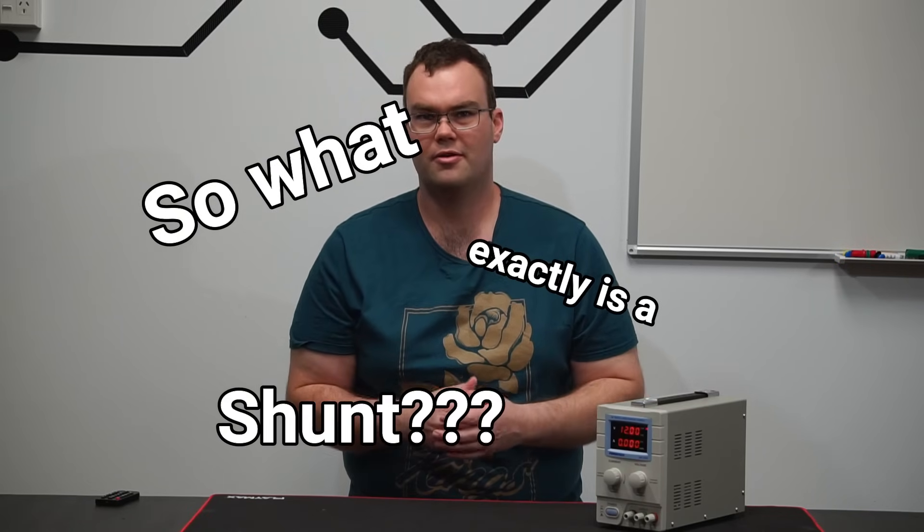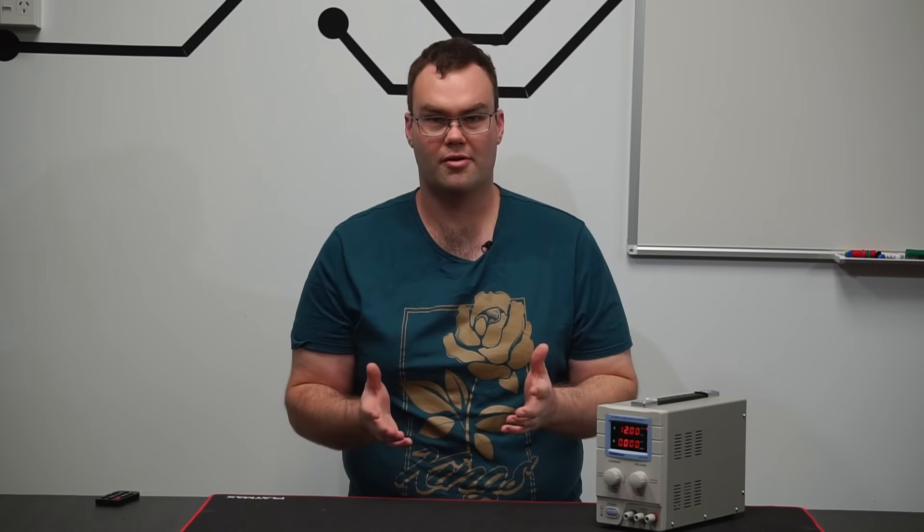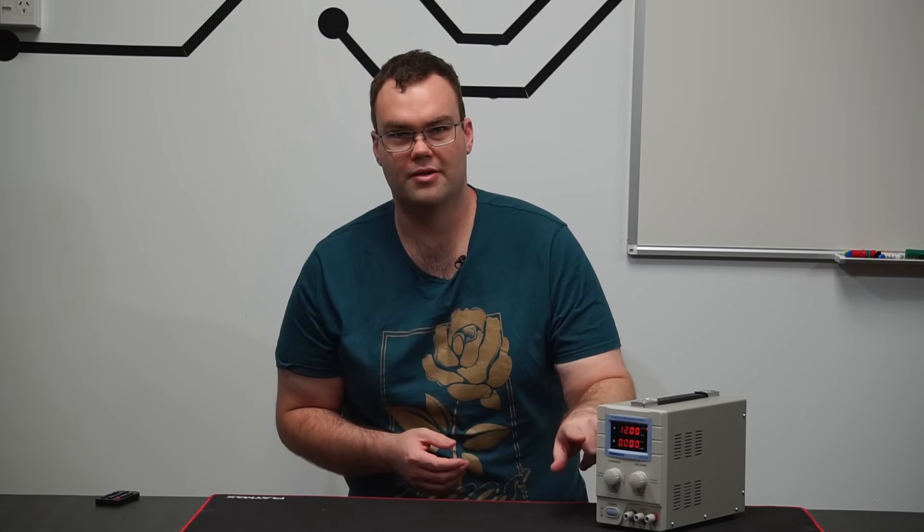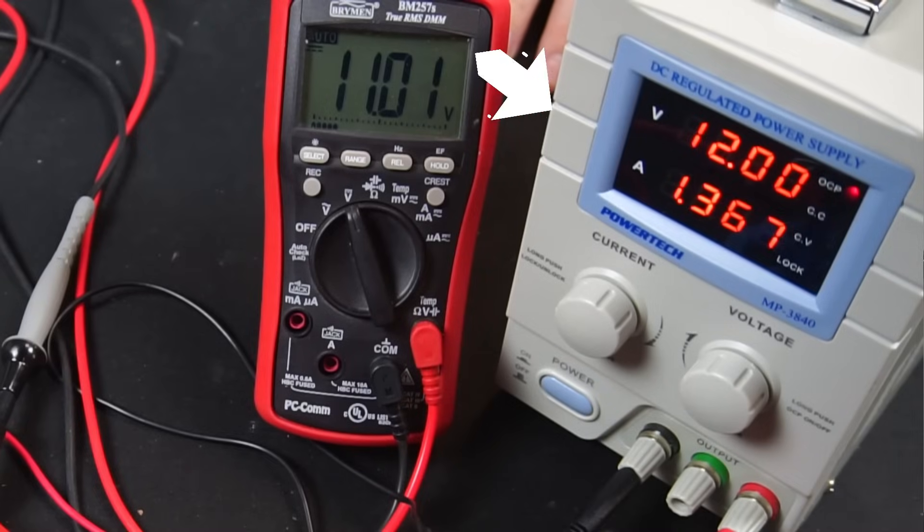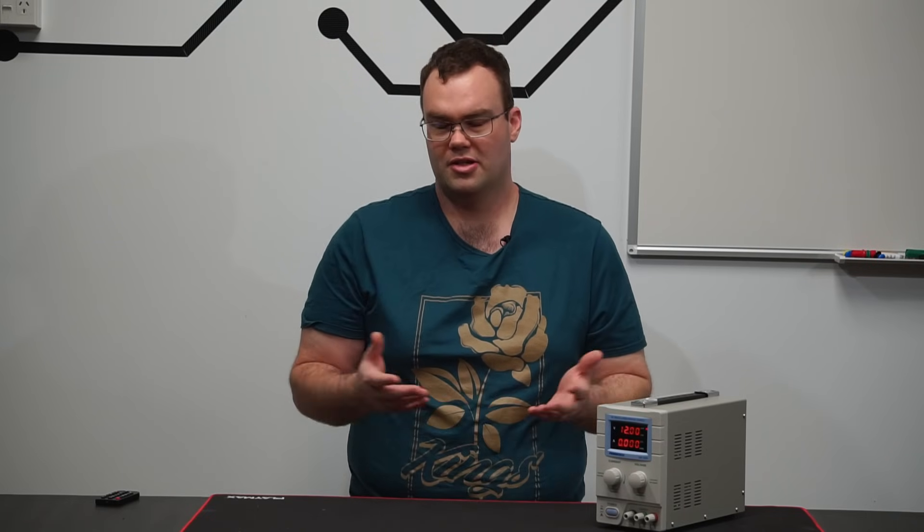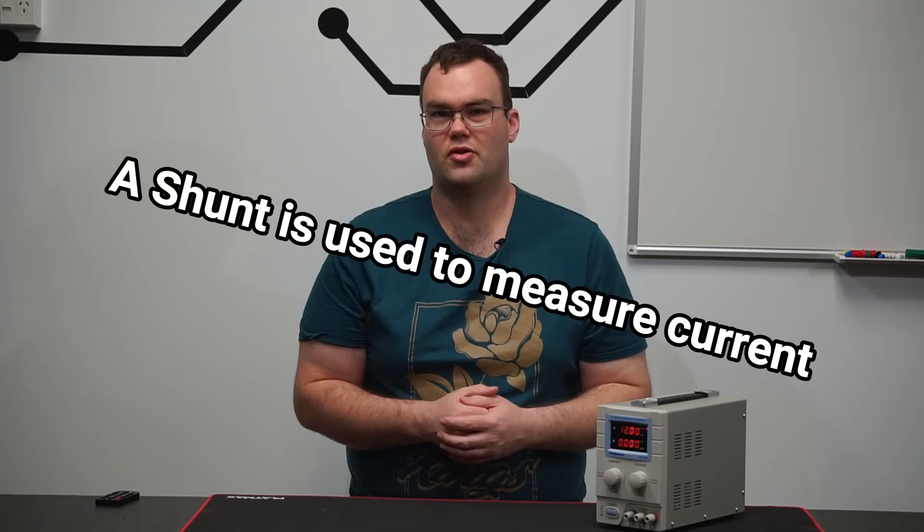So what exactly is a shunt? Well, a shunt is used to measure current. For example, the amp meter on the front of my power supply uses a shunt to measure the output current from the power supply. So in a nutshell, a shunt is just used for measuring current.